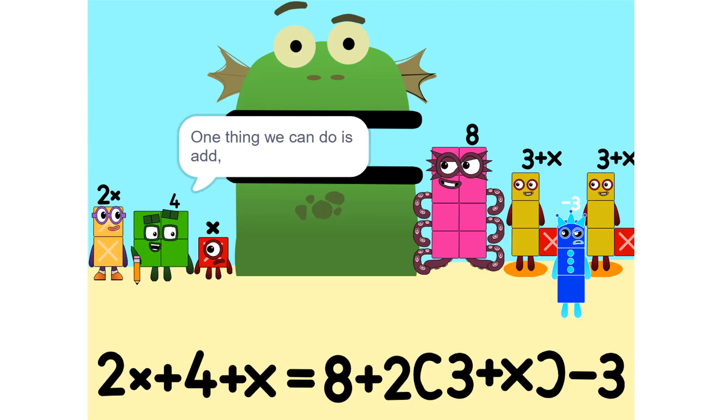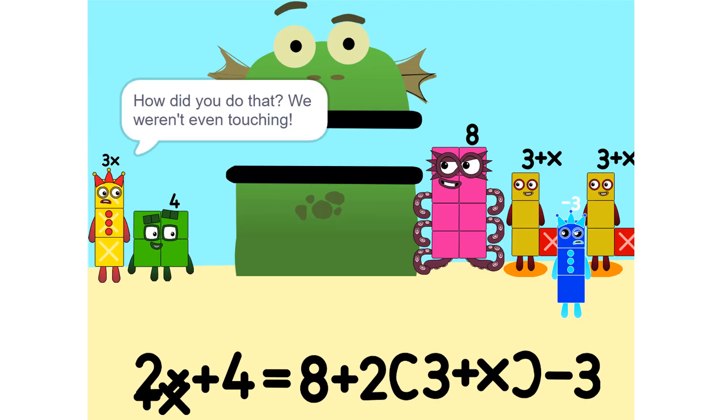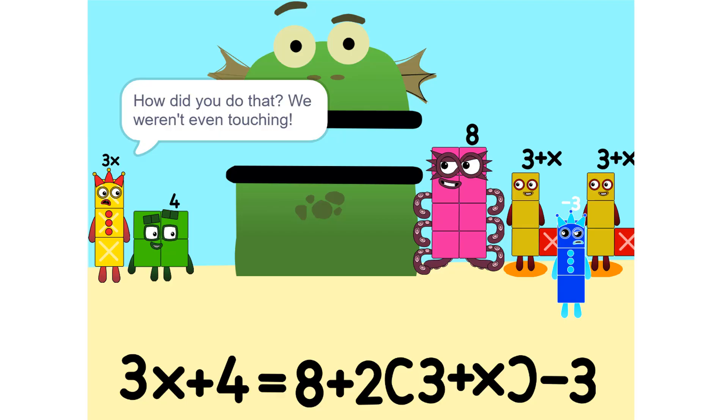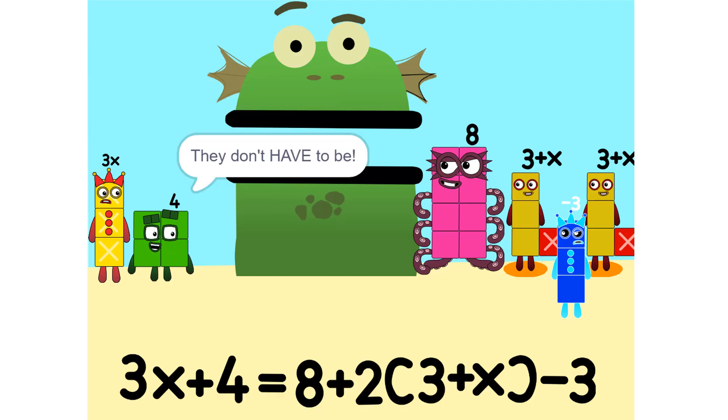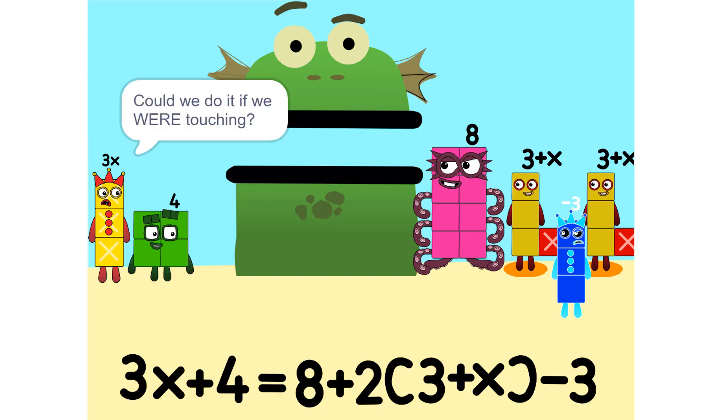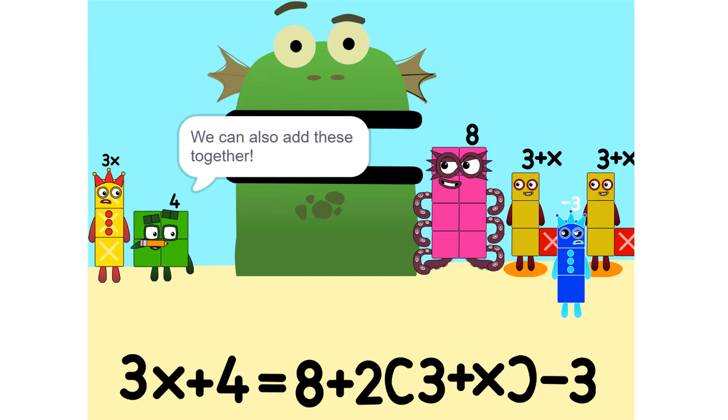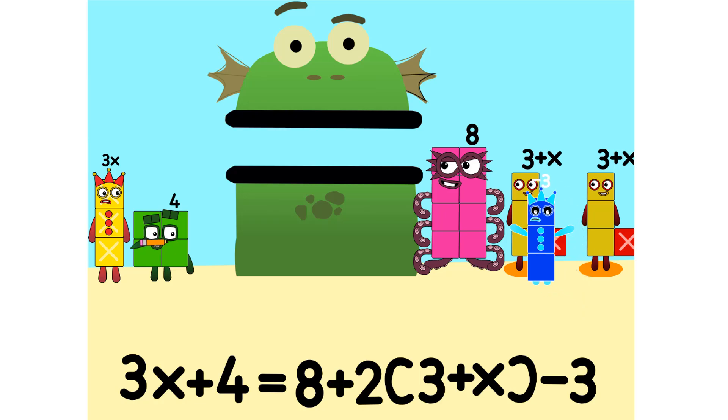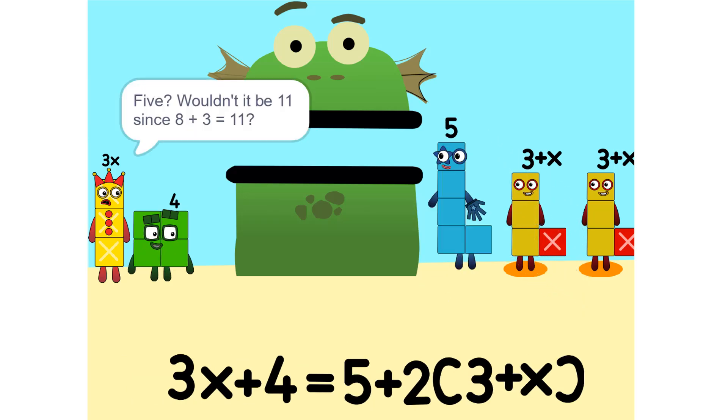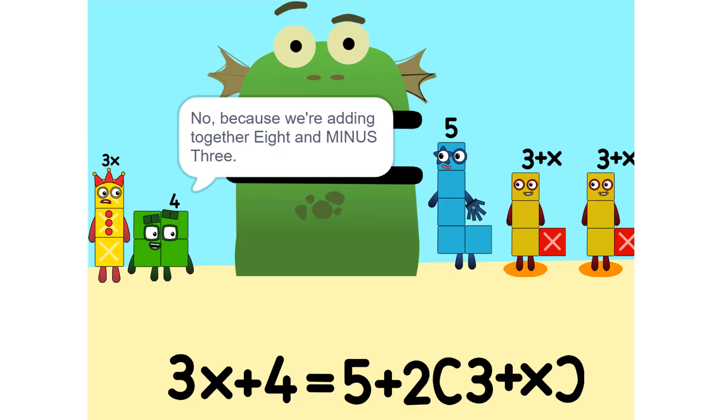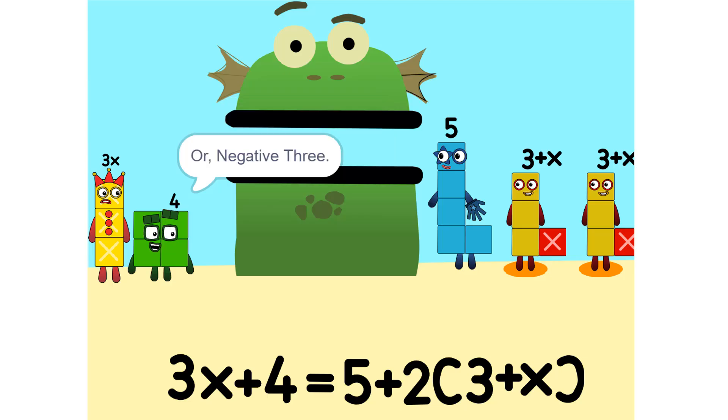One thing we can do is add these two together. How did you do that? We weren't even touching. They don't have to be. Could we do it if we were touching? Yeah. We can also add these together. 5. Wouldn't it be 11 since 8 plus 3 is 11? No, because we're adding together 8 and minus 3, or negative 3. So it's 5. Oh.